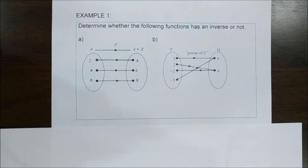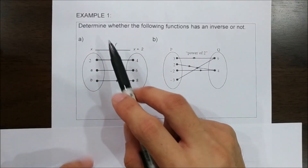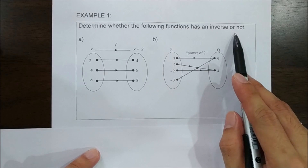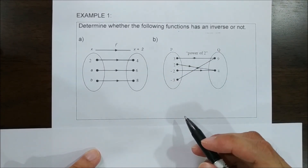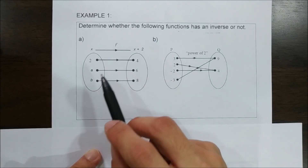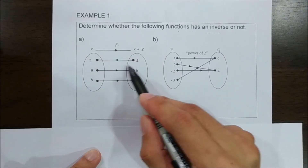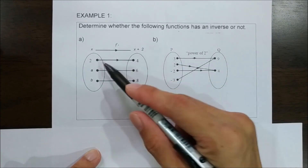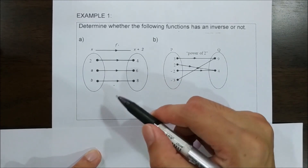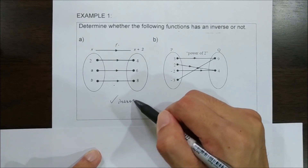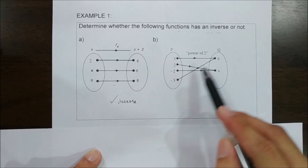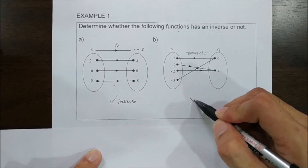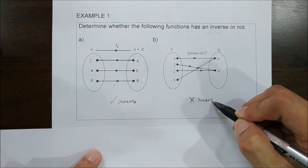So how do we use the first conjecture? We look at Example 1: determine whether the following functions have an inverse or not. Using Conjecture 1, if a given function is one-to-one, it has an inverse. If the given function is many-to-one, it does not have an inverse function.